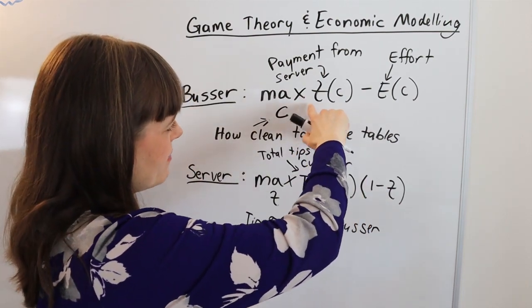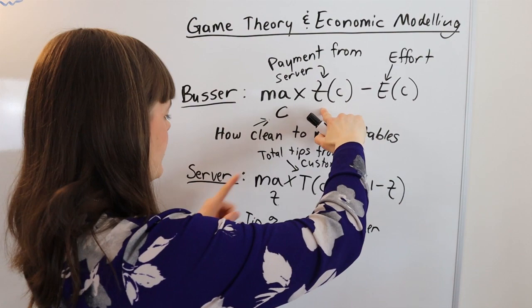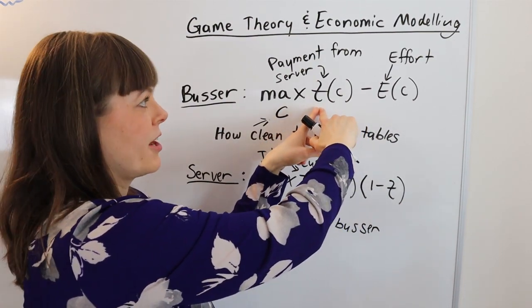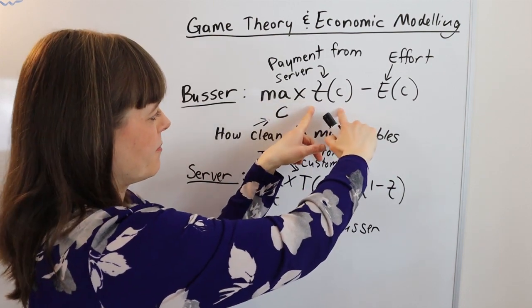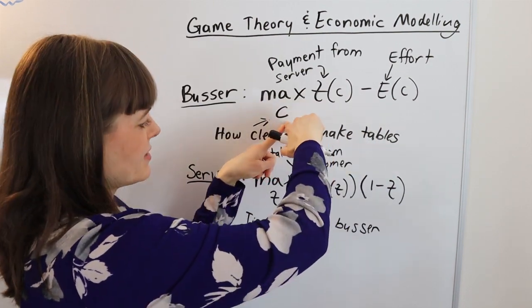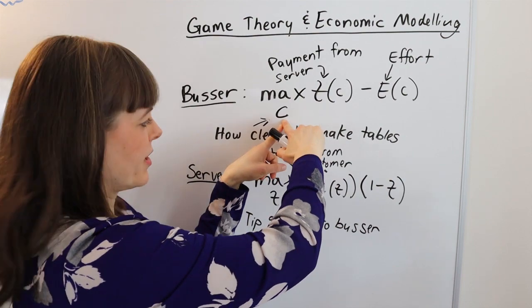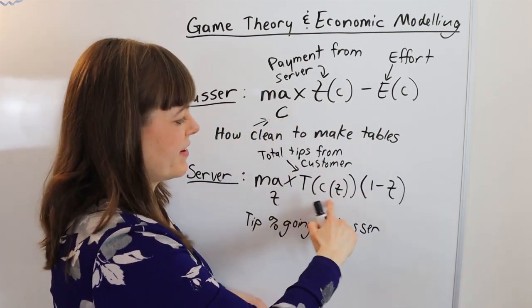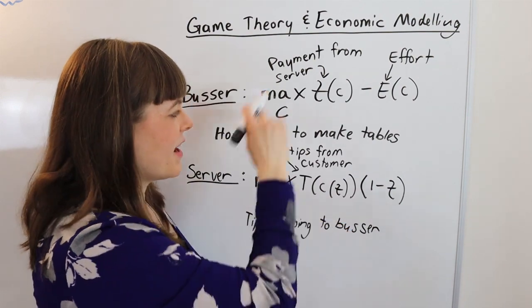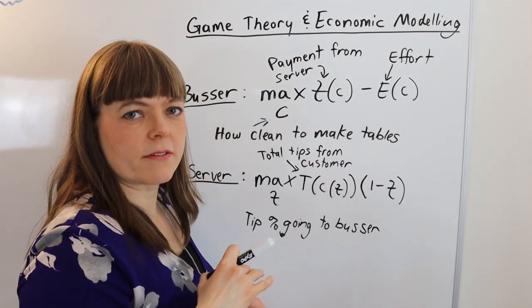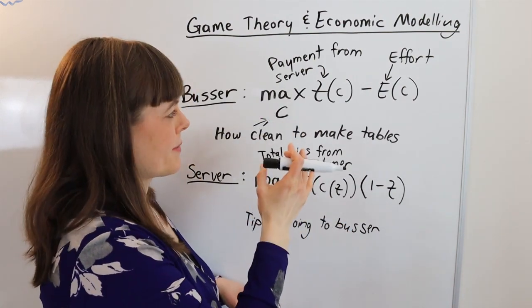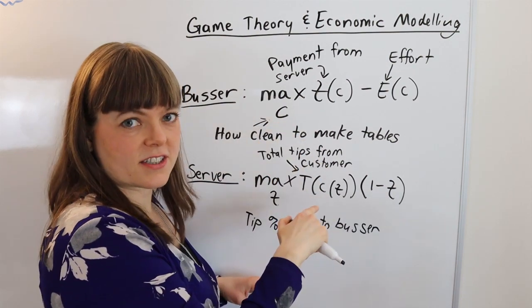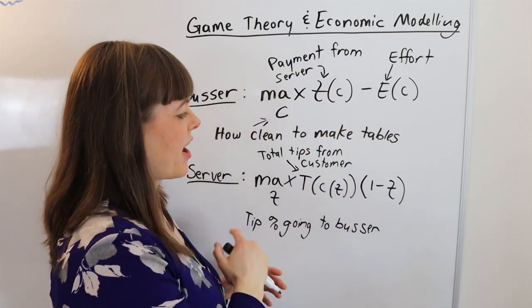The server's choice variable is a choice variable in her model and an endogenous variable in the busser's model — it's actually a benefit up there. The busser's choice variable is a choice variable in his model and endogenous in the server's model — it's part of the benefit there. That is the feature of game theory when it shows up in economic models: the choice variable here is endogenous somewhere else, and there's this interaction.